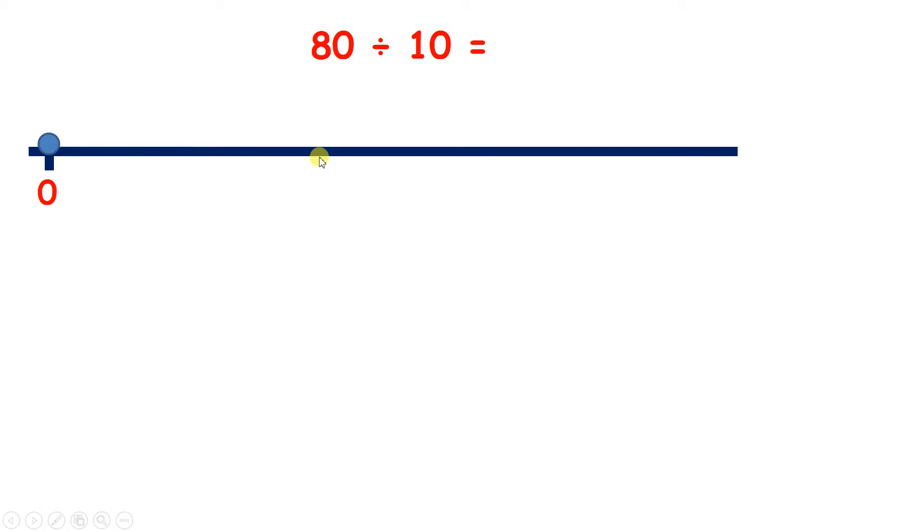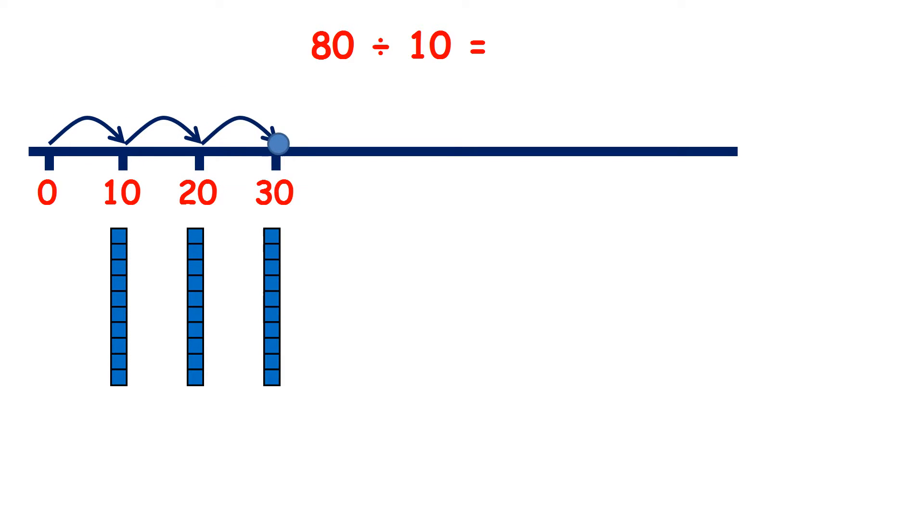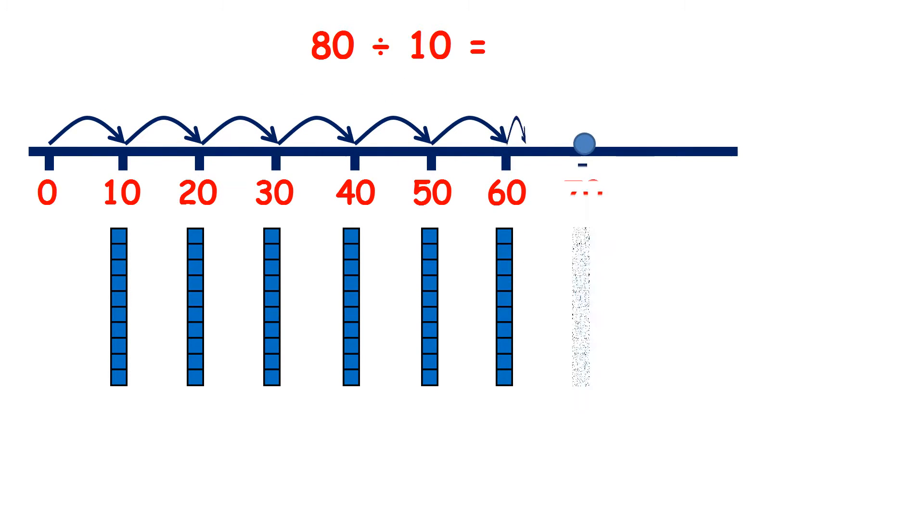But if we want to use a number line, we can count on: 10, 20, 30, 40, 50, 60, 70, 80. So we've made 8 jumps of 10, we have 8 tens, so 80 divided by 10 is 8.